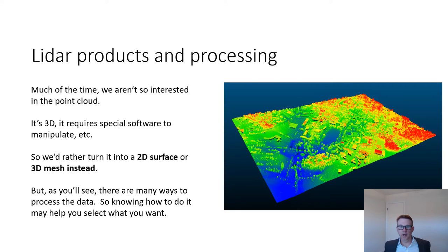So we're going to talk about two of those products today. One is the DTM or the digital terrain model. Another is the DSM or digital surface model. We'll also talk about the digital canopy model, sometimes called the canopy height model, which is sort of a combination of those two things.